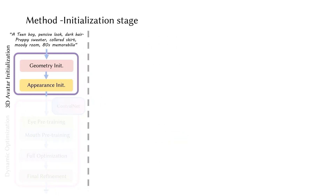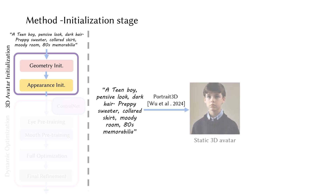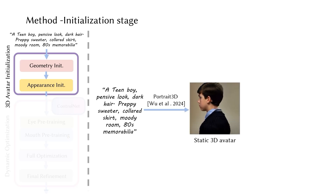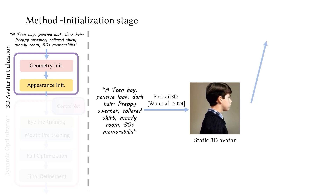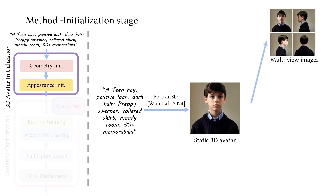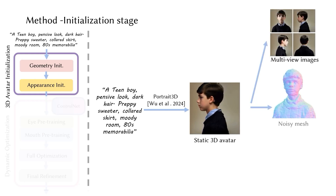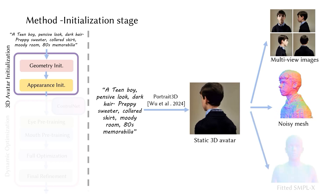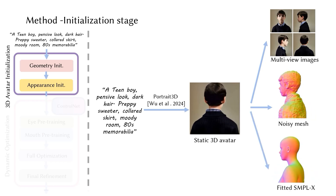In the initialization stage, we begin with a static 3D avatar generated by Portrait3D, represented as a neural radiance field. Next, we render multi-view images of the avatar from the Portrait3D output, extract a raw mesh, and fit a SMPLX model for animation.